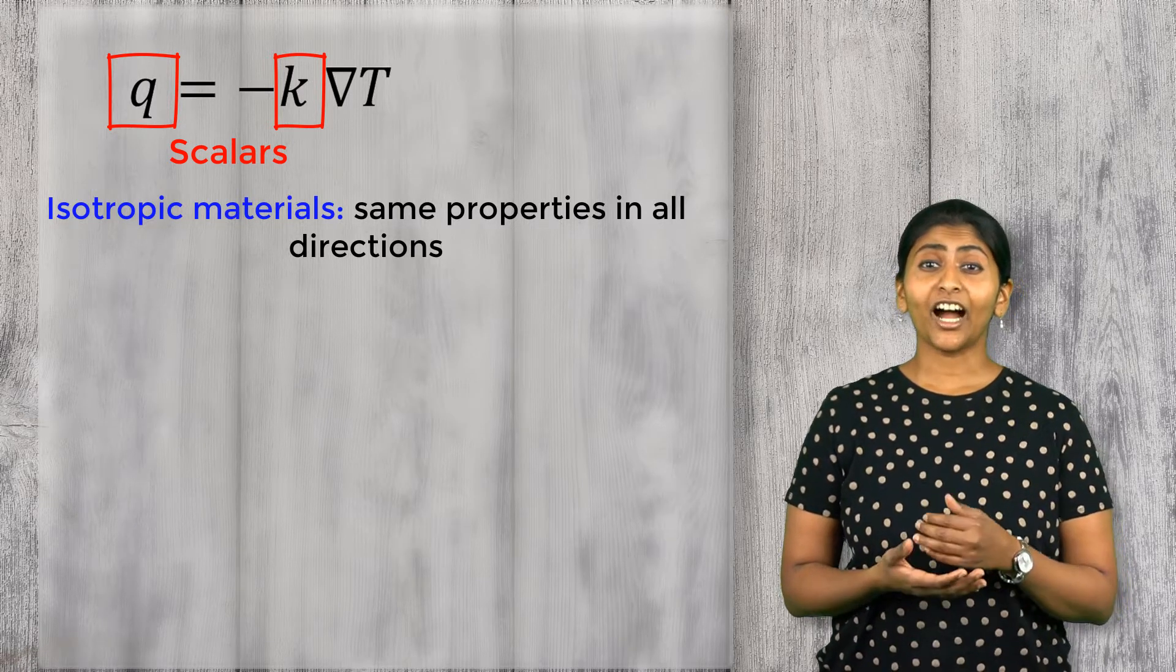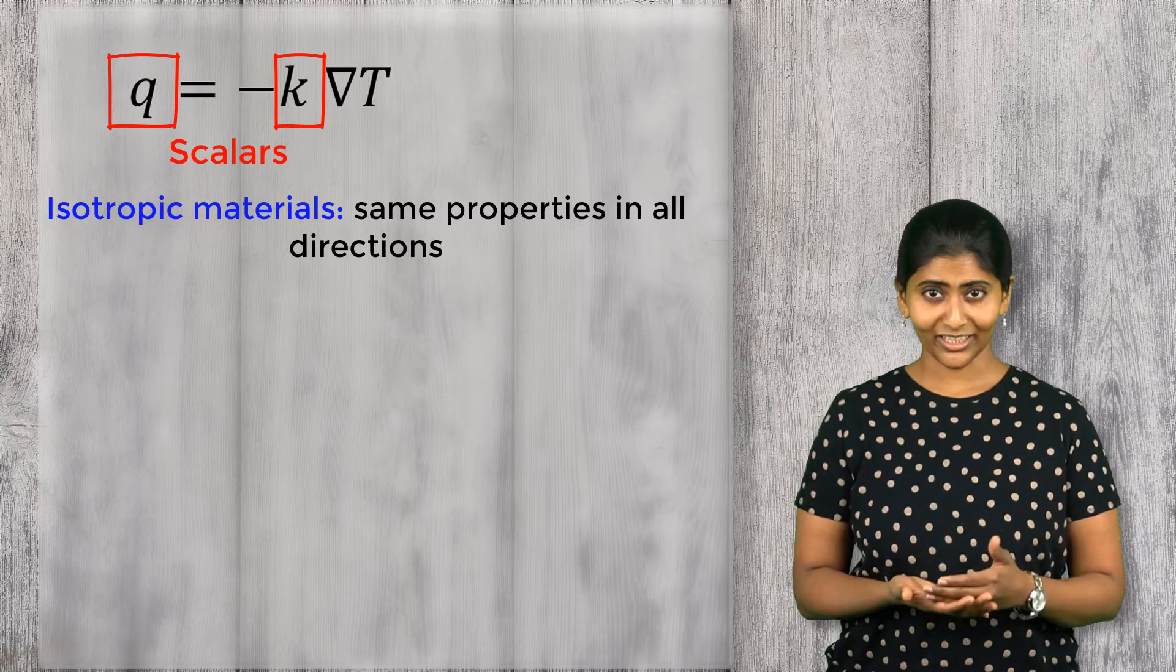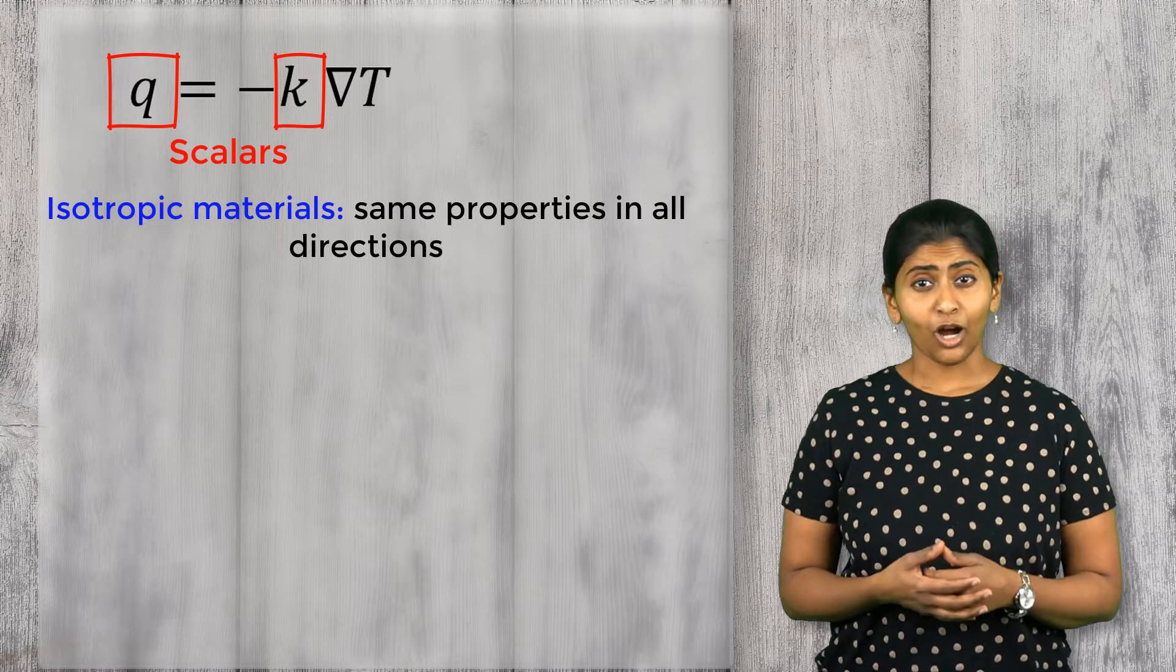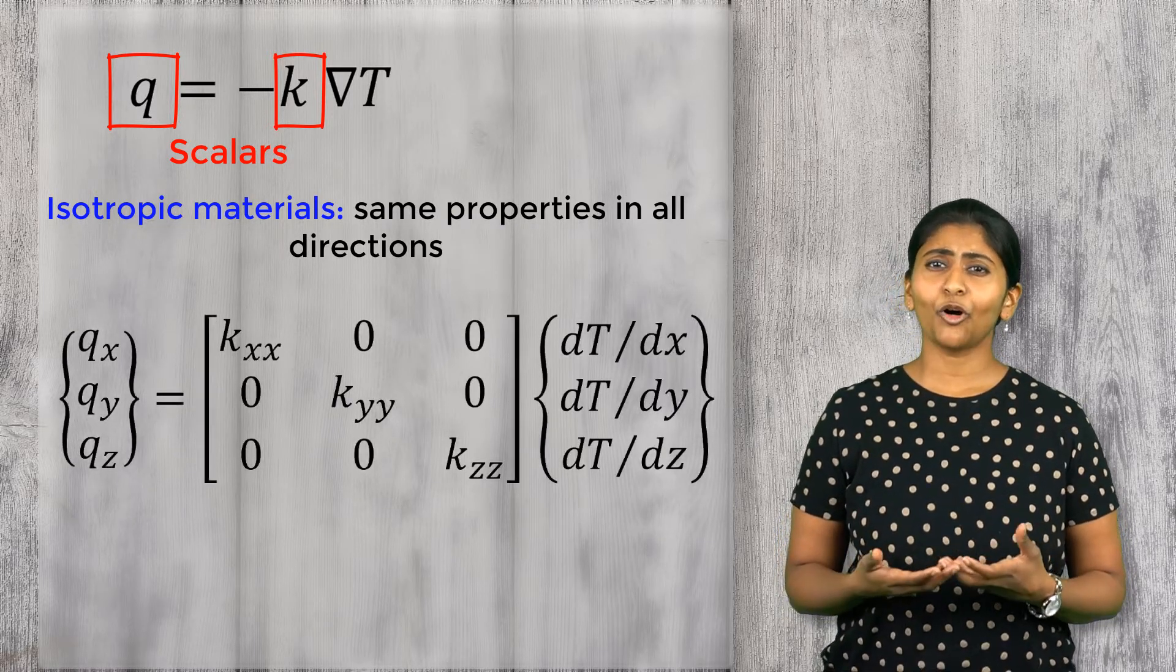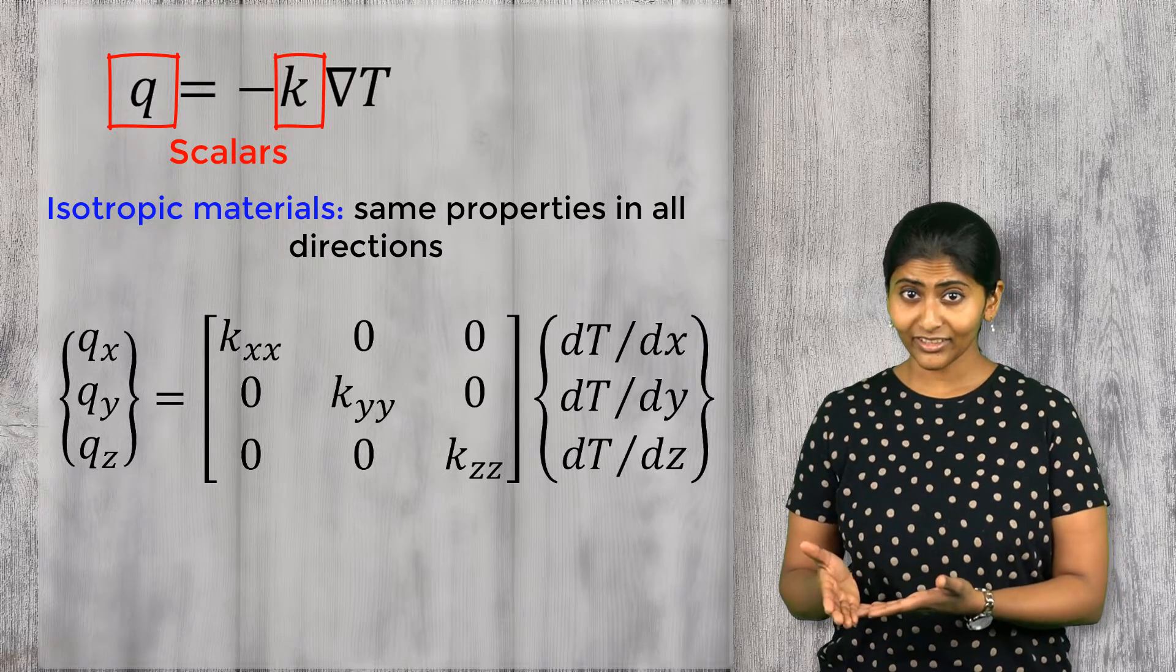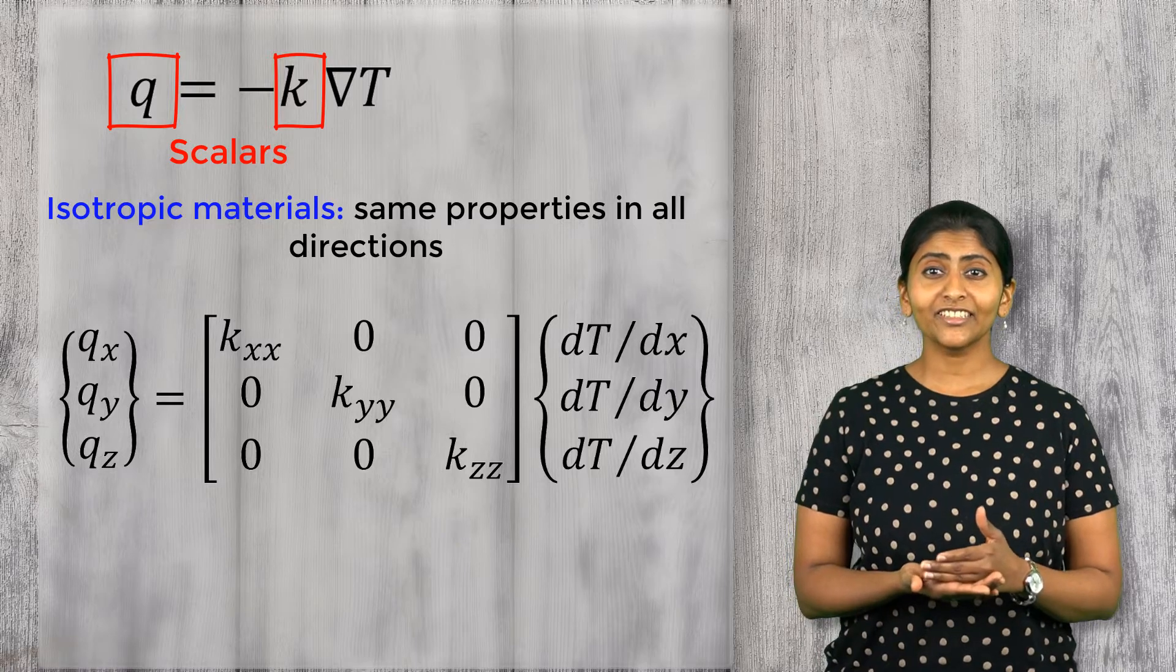Isotropic materials have identical values of thermal conductivity in all the directions. However, in the more general form of Fourier's law, the heat flux is a vector while the thermal conductivity is a tensor.